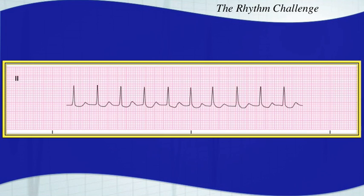Here's your next arrhythmia. Make sure you hit pause and try to give a good interpretation. This is a junctional tachycardia — no obvious atrial activity, or no P waves before the QRS complex. They have a narrow QRS complex. It is a very regular rhythm. Junctional tachycardia, greater than 100 beats per minute.